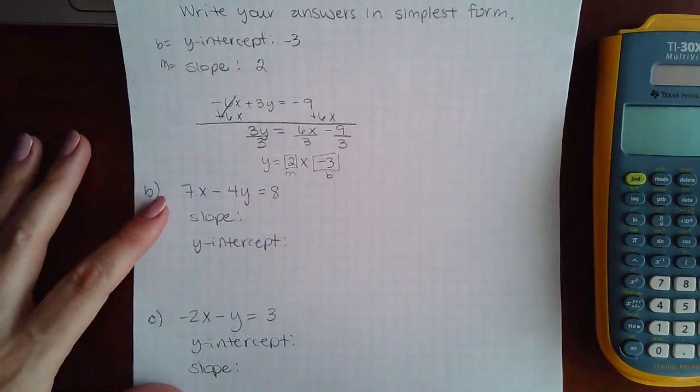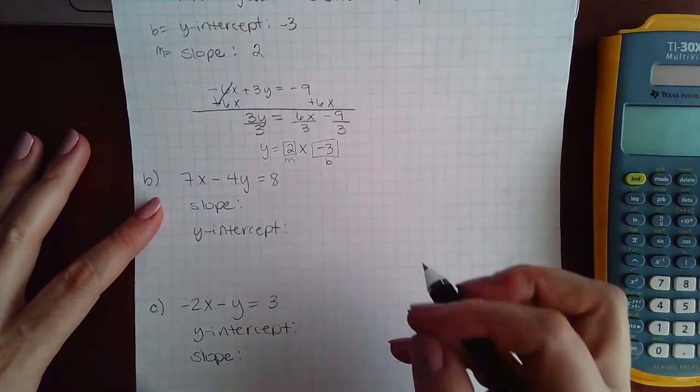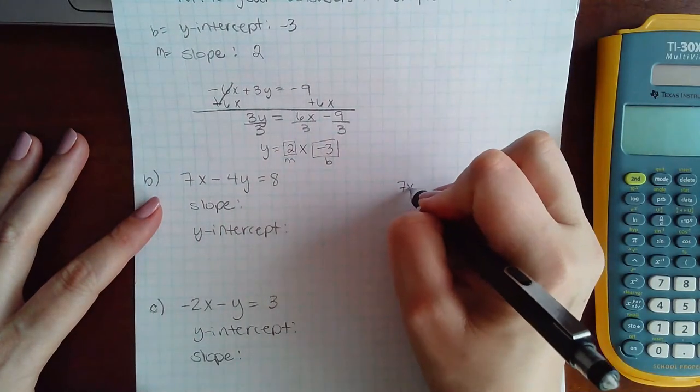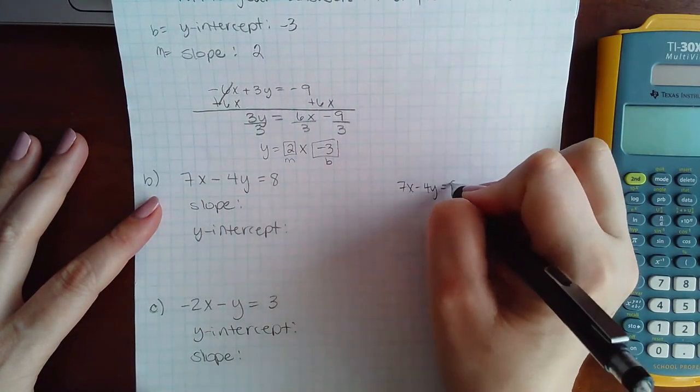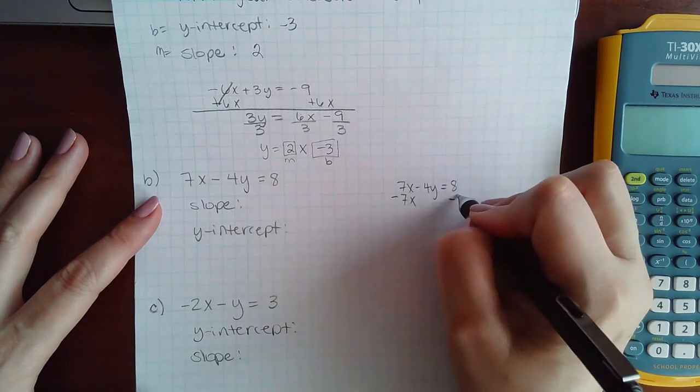Let's try another example. I have a couple more. So we're going to take this equation, 7x minus 4y equal 8. We're going to try to isolate the y.